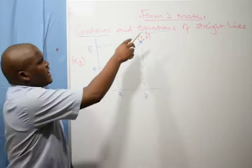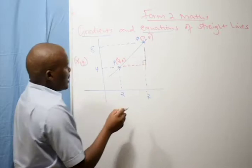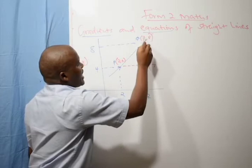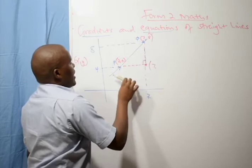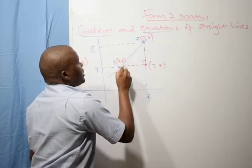So if I want to find the slopeness or gradient of this line, I come here and draw a right-angled triangle. At this point here, the coordinate can be (7, 4) — this seven is the same seven from point Q, meaning they share the X value. And this four is the same four from point P, meaning they share the Y value.